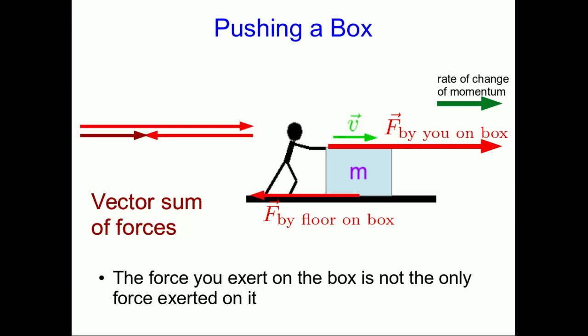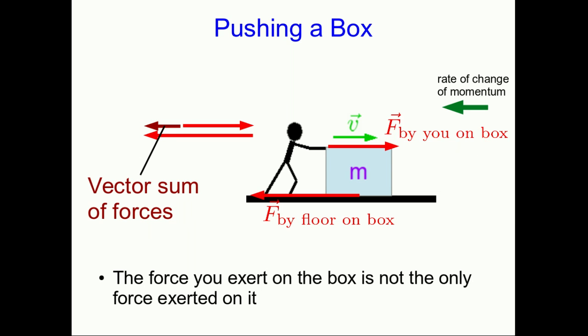Now the vector sum looks like this, with the big forward-pointing vector by you, the smaller backward-pointing vector due to the floor pointing back, and the vector sum pointing forward. Or, of course, you could push less hard. Now the box will slow down and the vector sum of forces points back.